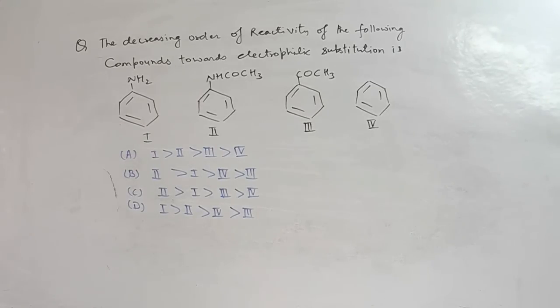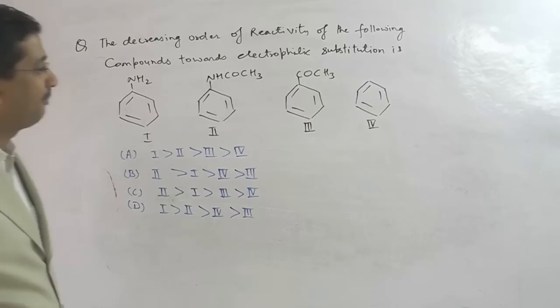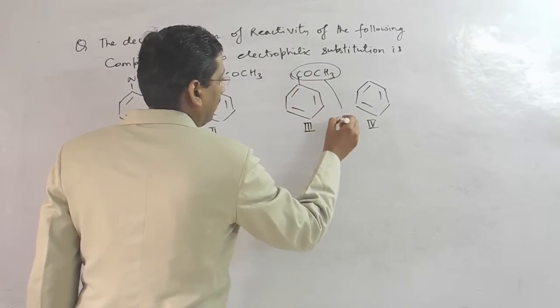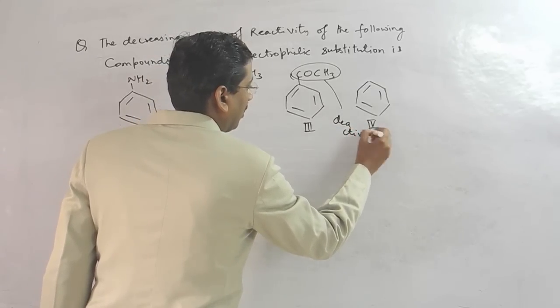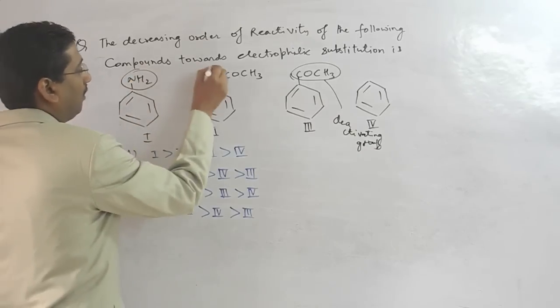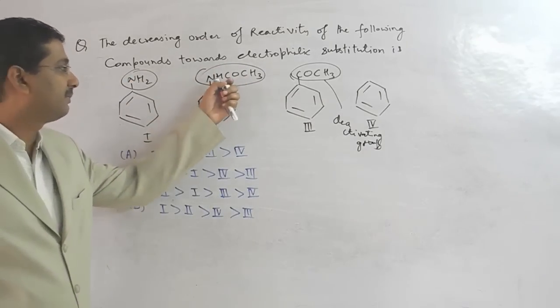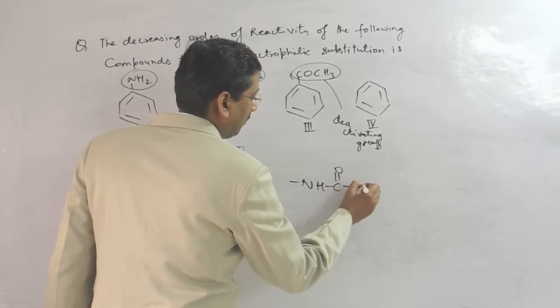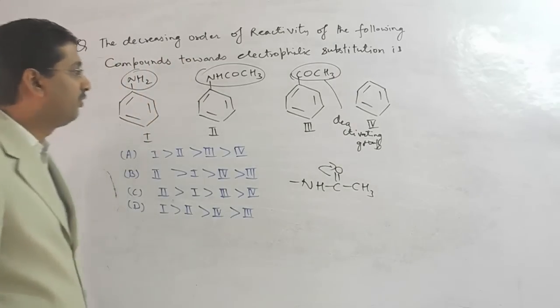So this question is the decreasing order of reactivity of the following compounds towards electrophilic substitution. In electrophilic substitution, every activating group will make fast reaction and deactivating groups will make slow reaction. This is more activating and CO withdraws electron, so this is more activating.